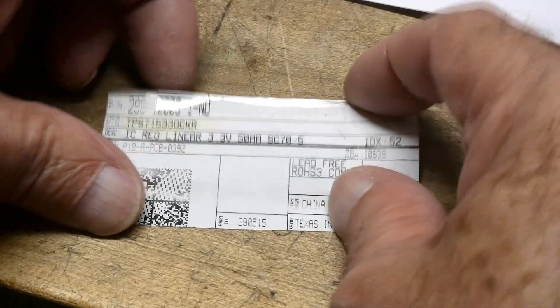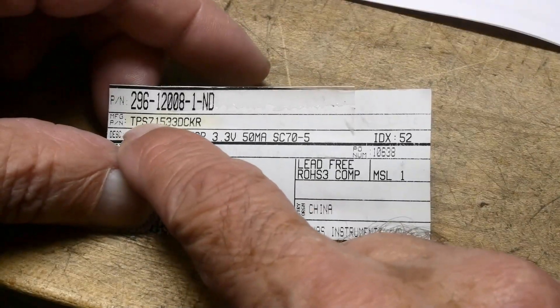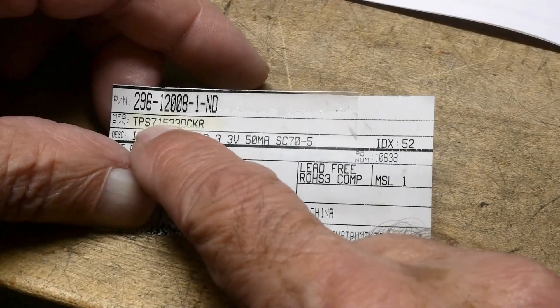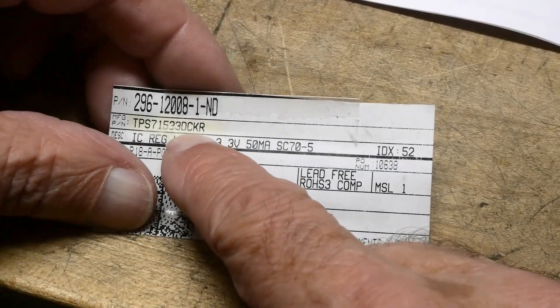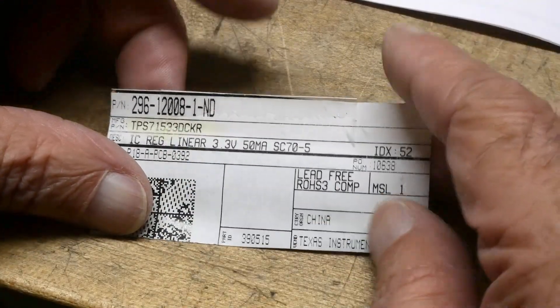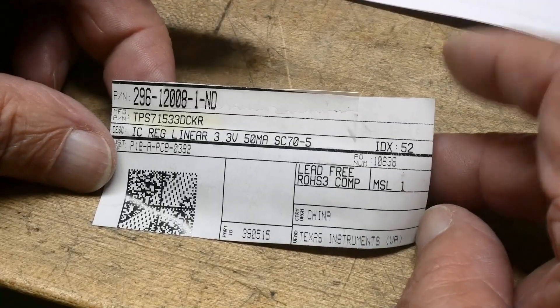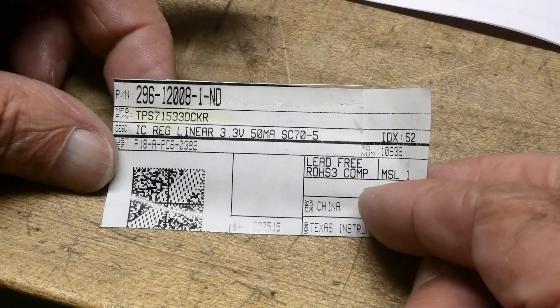All right, Chip of the Day. The Chip of the Day is a TPS-71533DCKR from Texas Instruments, made in China.